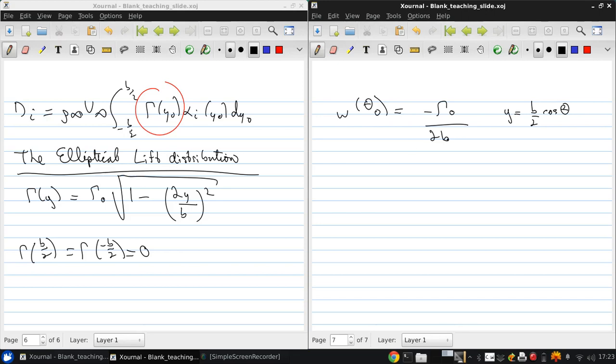So from this, what's important is that the downwash is a constant, it doesn't depend on any variation along the span. And if we look at the induced angle of attack, we can see that it is also constant.